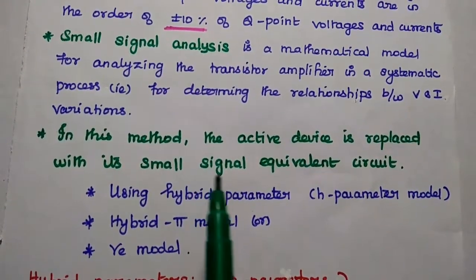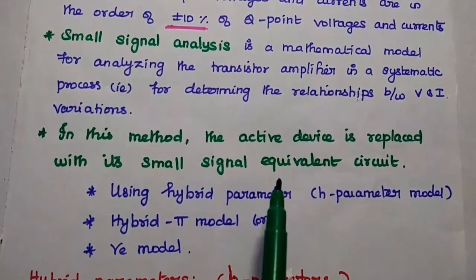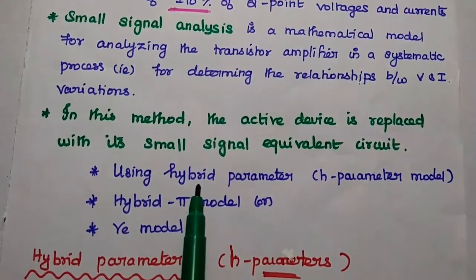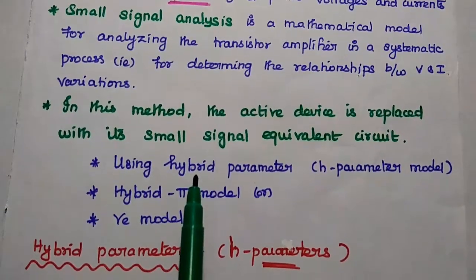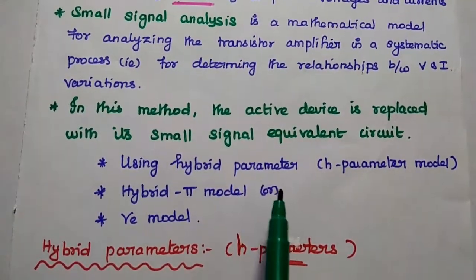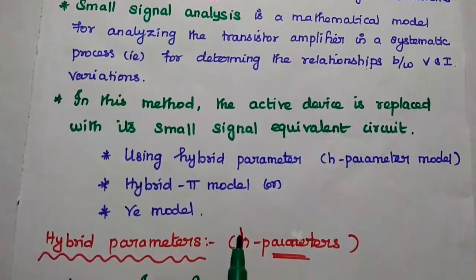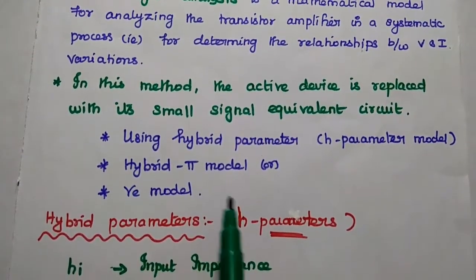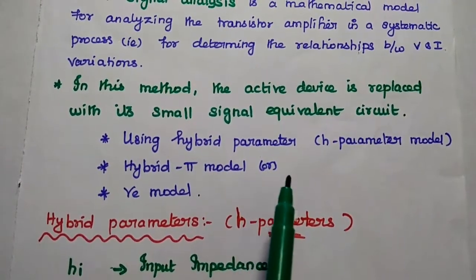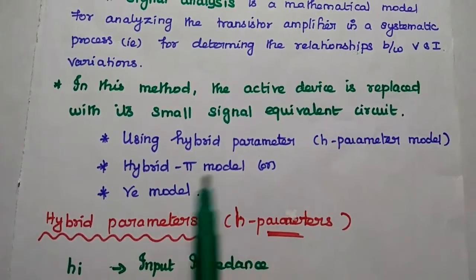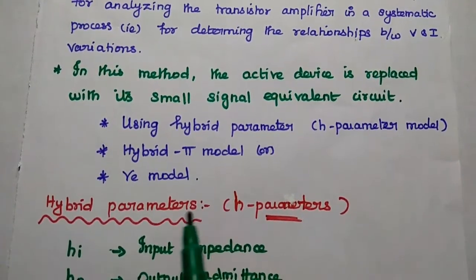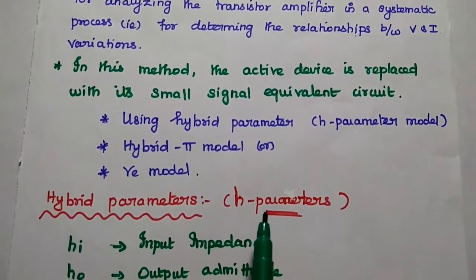In this method, the active device is replaced with its small signal equivalent circuit. This small signal equivalent circuit can be drawn using any one of the models, like the hybrid parameter or H-parameter model, the hybrid pi model, or the RE model.